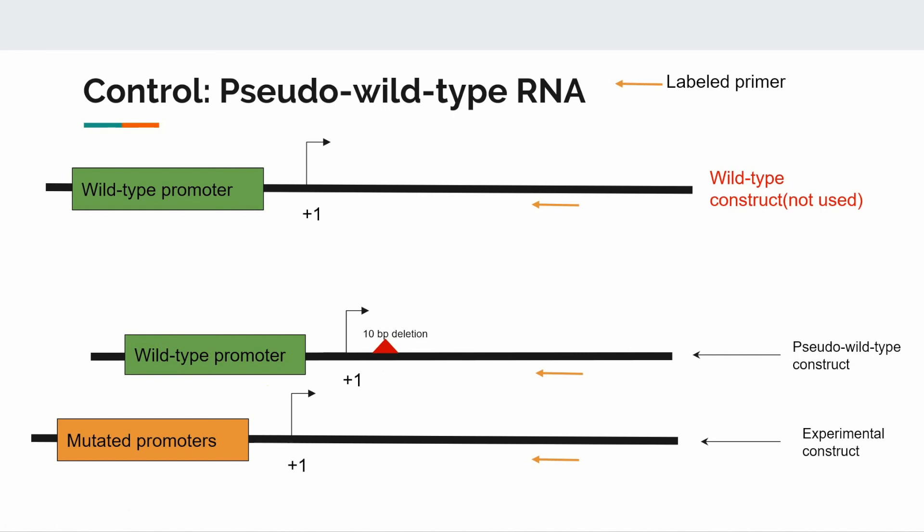The purpose of this construct is that we have a baseline of transcription levels in the cells, so we can compare whether there's a difference in level of transcription for the linker scan DNAs by comparing the intensities of their RNA products to the pseudo-wild type bands on a gel.